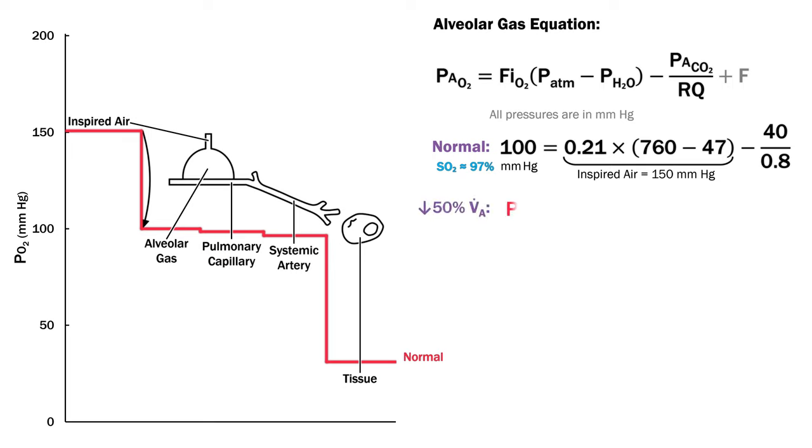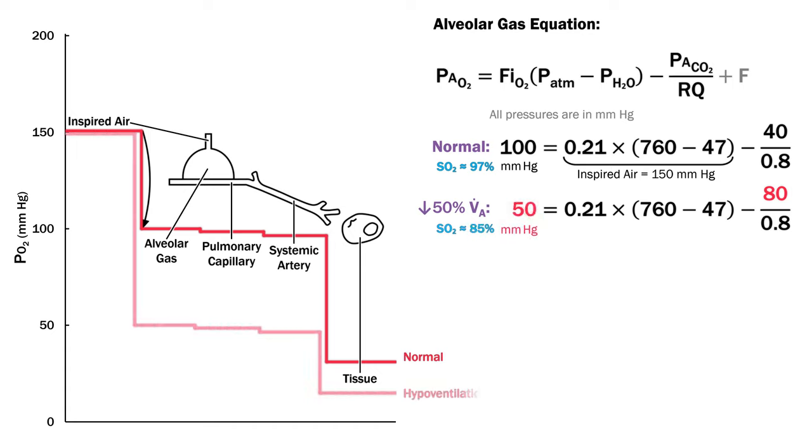For example, from the alveolar ventilation equation, we know that if we halve the effective ventilation, it will double the partial pressure of CO2 to 80. If we feed this into our equation now, we have a much greater drop of 100 millimeters of mercury with a PO2 of 50, which is a hypoxemic state and equates to an oxygen saturation of about 85%.